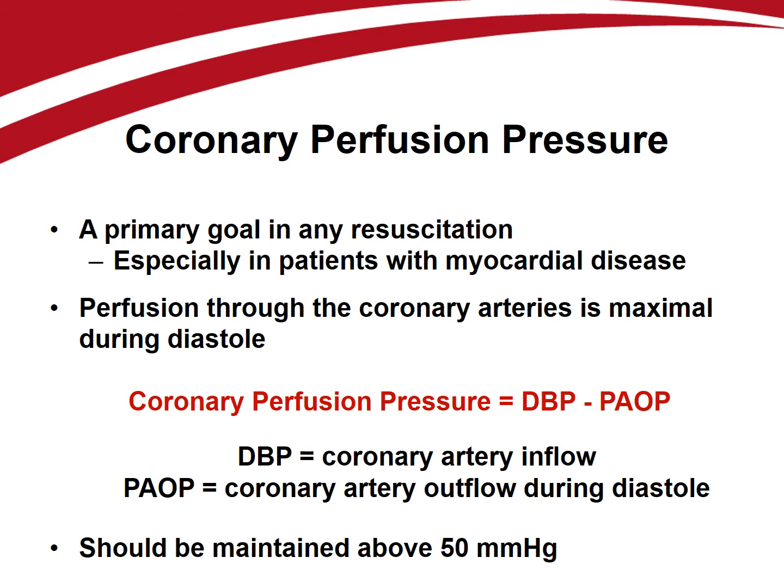Perfusion of the heart is a primary goal in any resuscitation, especially in patients with pre-existing cardiac disease. Without adequate myocardial blood flow, the heart will not pump properly and contractility will be decreased. Diastolic blood pressure is the inflow pressure to the coronary arteries. As myocardial blood flow through the left ventricle primarily occurs during diastole, we use pulmonary artery occlusion pressure to estimate coronary outflow pressure. Coronary perfusion pressure is therefore diastolic blood pressure minus pulmonary artery occlusion pressure, and should be maintained above 50 mmHg. I become very concerned whenever I see a diastolic blood pressure less than 50 mmHg, especially in elderly patients, as their coronary perfusion pressure is by definition already inadequate.